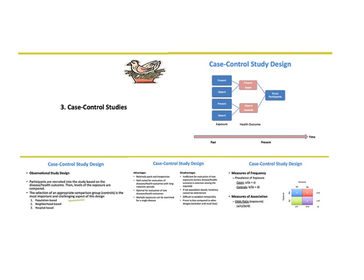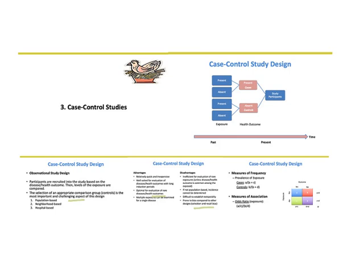There are three subtypes of case-control studies: population-based, neighborhood-based, or hospital-based. Advantages include that they are relatively quick and inexpensive, and well-suited for health outcomes with long incubation periods or rare diseases. Disadvantages include inefficiency for rare exposures — the opposite of cohort studies — and that incidence cannot be determined unless the study is population-based. They are also prone to bias compared to other designs, specifically selection and recall bias. Measures of frequency are typically prevalence, unless population-based, in which case incidence can be calculated. Measures of association are typically odds ratios.